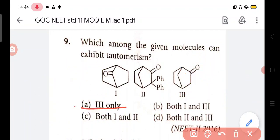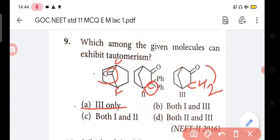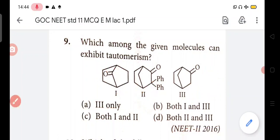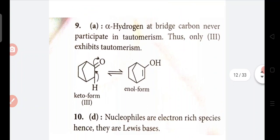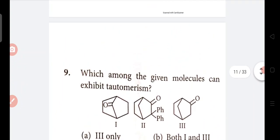Only option 3 works here - the CO group's carbon has only one hydrogen above it. The 5-membered carbon is in the same plane, so no extra hydrogen comes above it. Alpha hydrogenated bridge carbon never participates in tautomerism - that bridged carbon, you see.